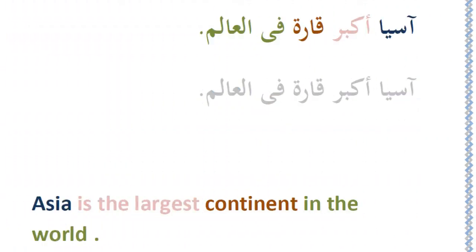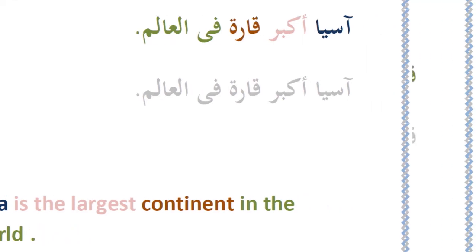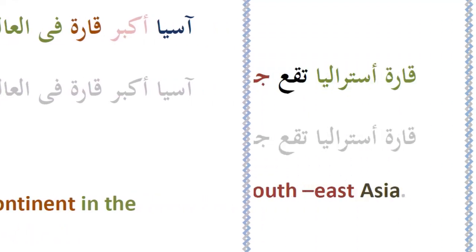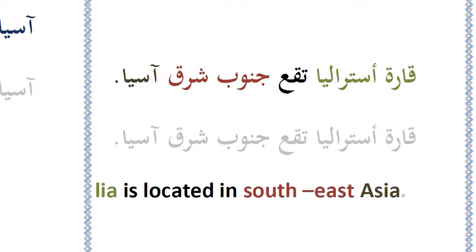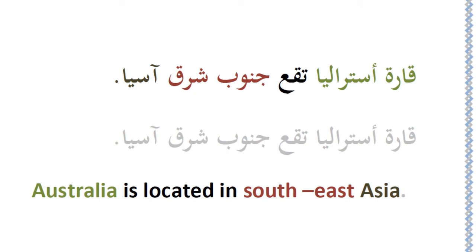Second sentence: Asia akbar qara fi al-alam — Asia is the largest continent in the world. Third sentence: Taqau Australia tajah junub sharq Asia — Australia is located to the south-east of Asia.